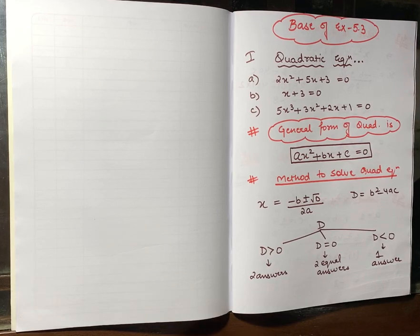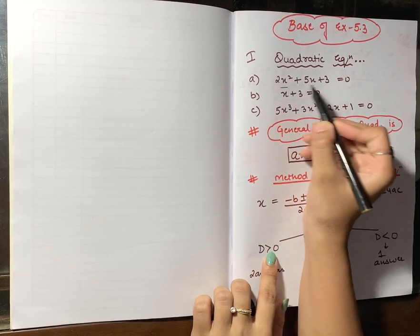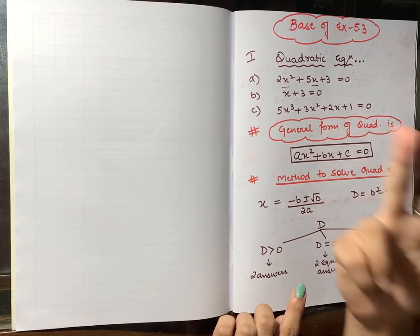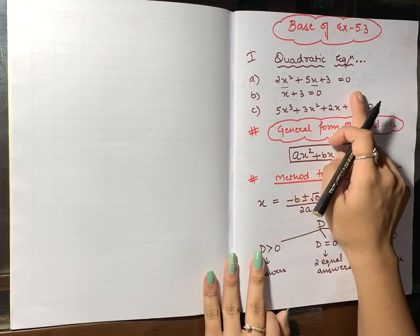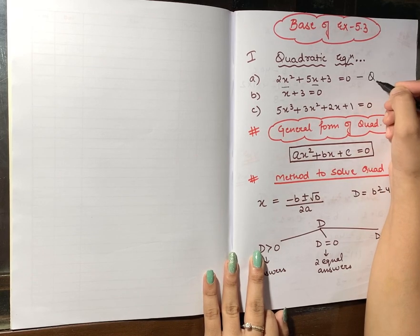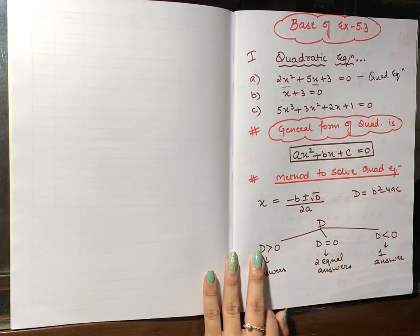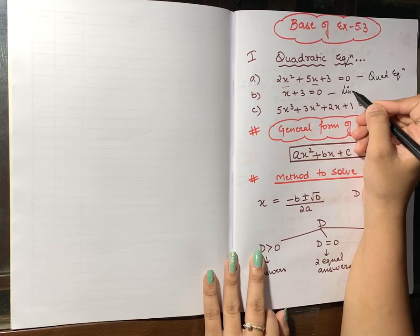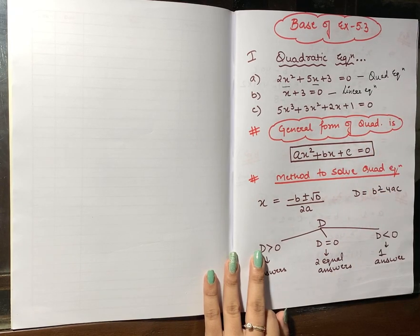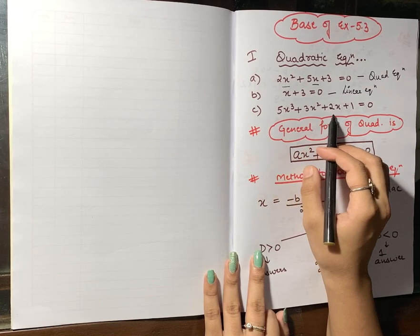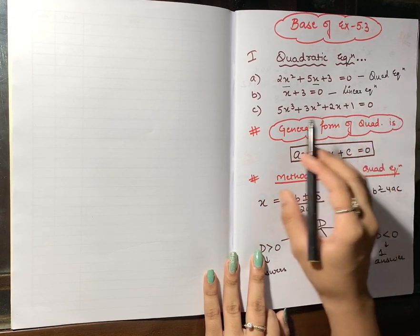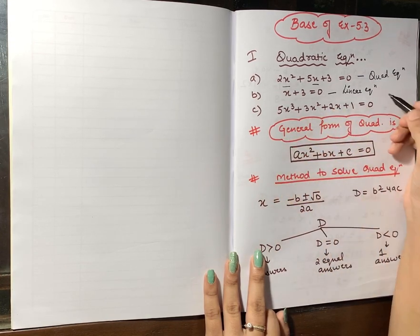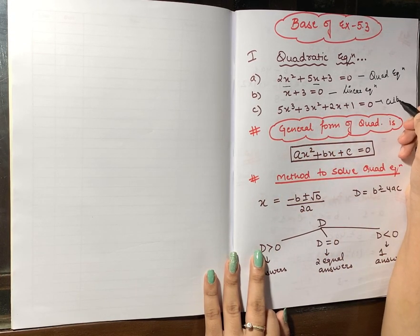So let's get started. The first part is quadratic equations. We know that quadratic equations are those equations in which the variable's maximum power is 2. For example, 2x² + 5x + 3 is a quadratic equation. An equation like 5x³ + 3x² + 2x + 1 = 0 has maximum power 3, so it is called a cubic equation.